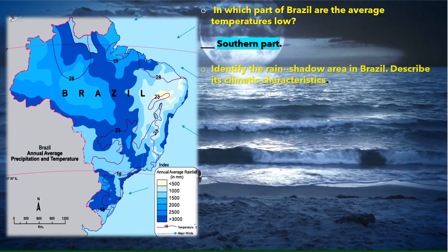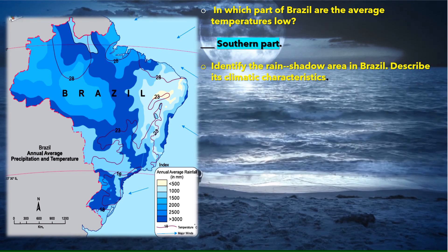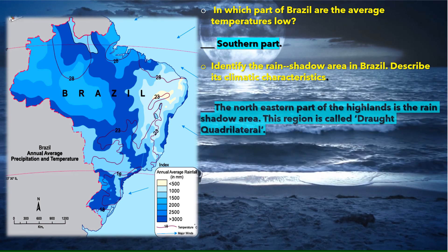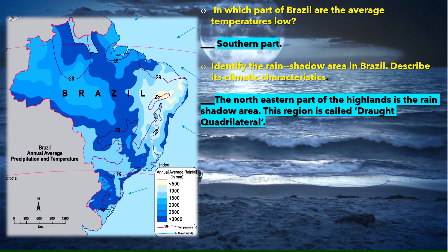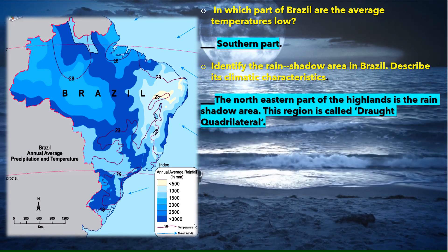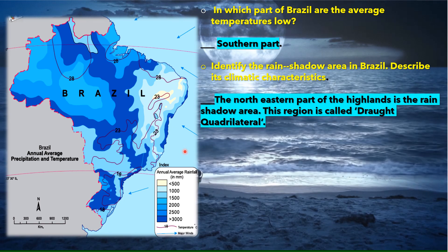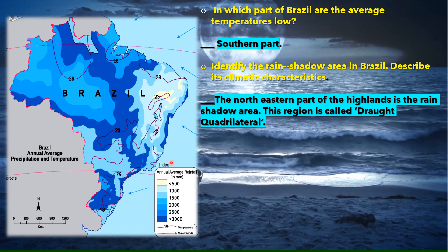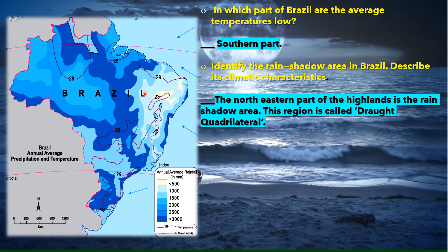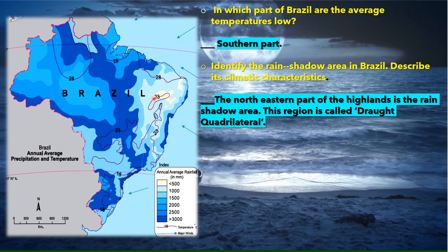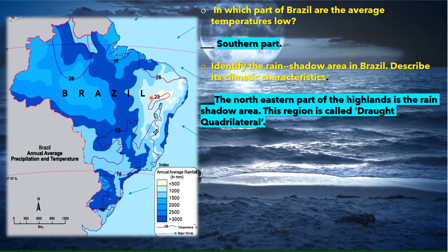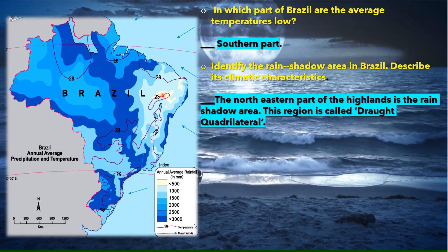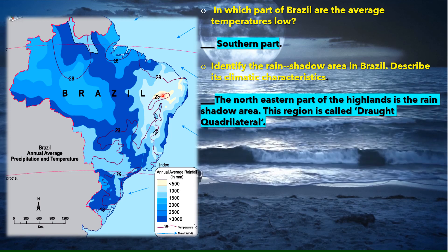Identifying the rain shadow area in Brazil: the northeastern part of the highlands is the rain shadow region. The great escarpment acts as a barrier to the southeast trade winds, and the leeward northeastern side receives very little rainfall — less than 500 mm. This region is called the drought quadrilateral.